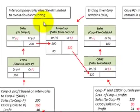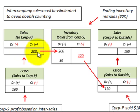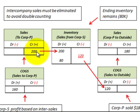Here we're going to look at how we calculate our profits on sales between affiliated companies for consolidation purposes. For this example, we're going to have a subsidiary company selling $200,000 worth of goods to a parent company. So the subsidiary would have sales of $200,000 and they would move over into the parent company's inventory account for $200,000.